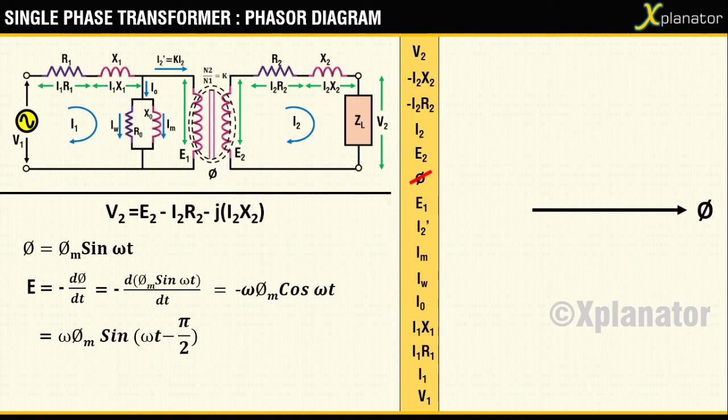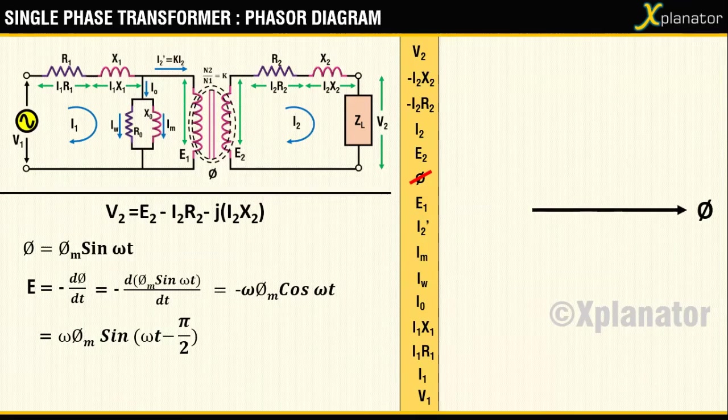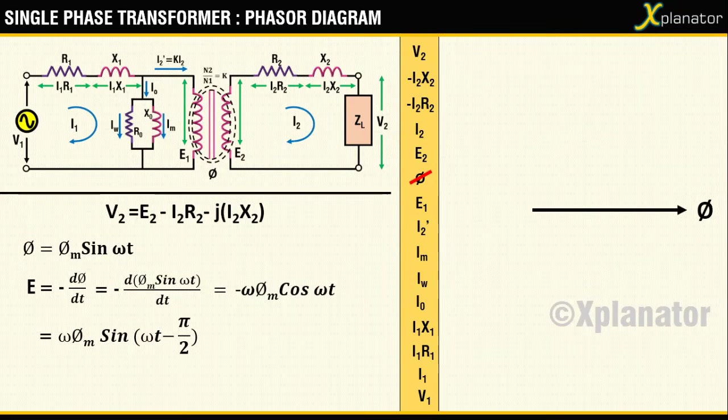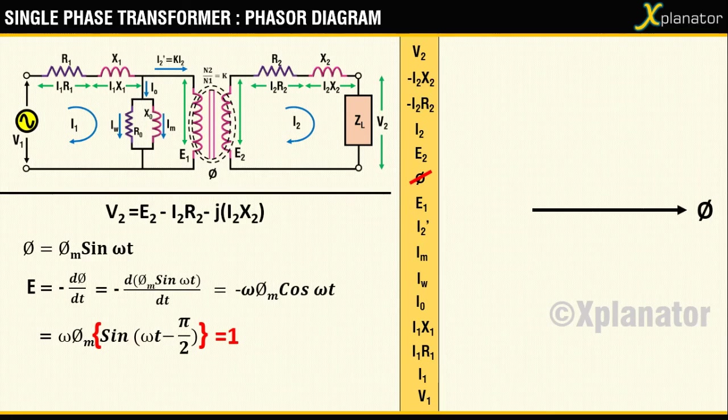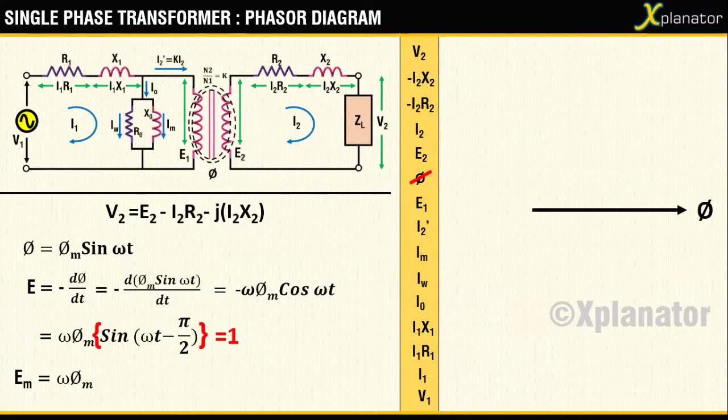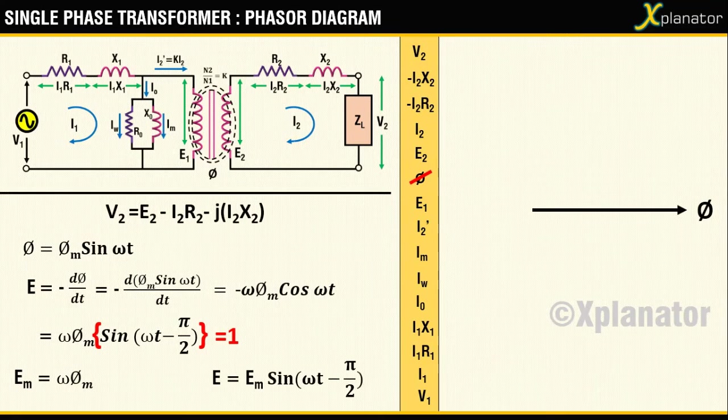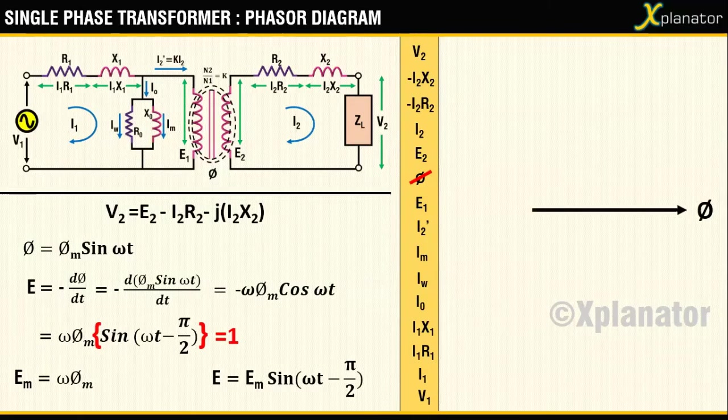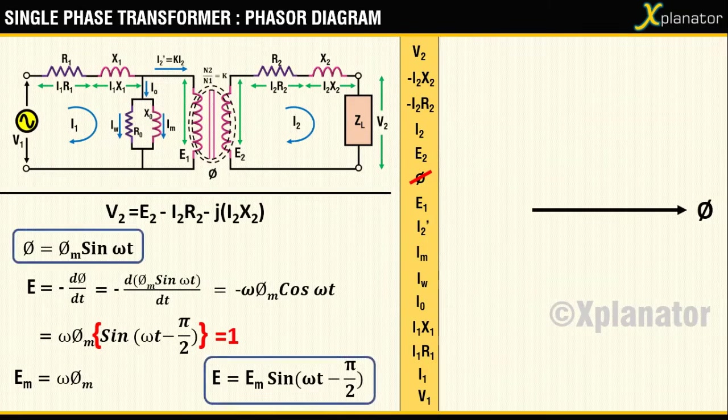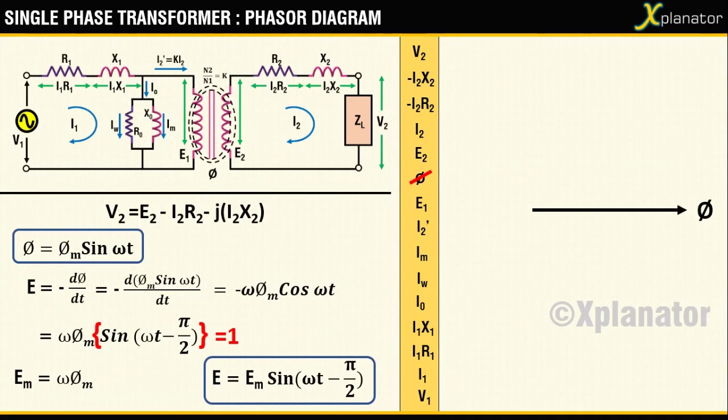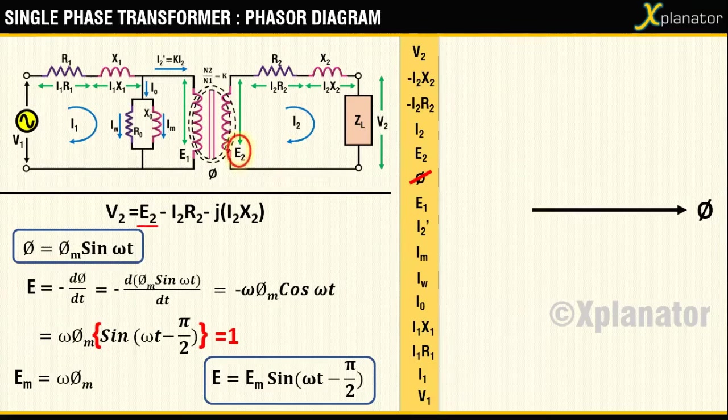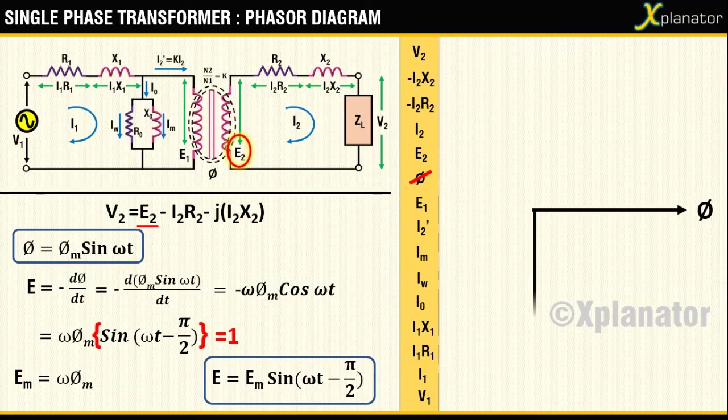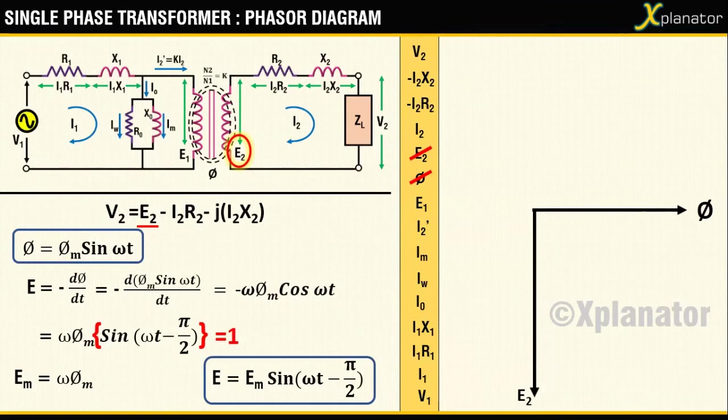When sine attains its maximum value of 1, the equation will attain its maximum value of E_M equal to omega Phi_M. Therefore, the EMF equation may be now written as E equals E_M sin(omega t minus pi/2). Comparing both these equations, you see that E lags Phi by 90 degrees. So you can draw E2 with reference to Phi as lagging by 90 degrees. It points in the minus y direction.